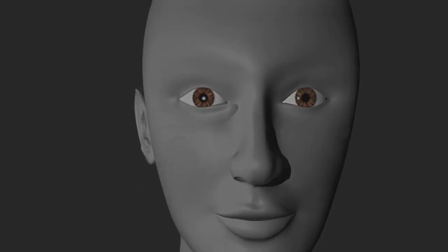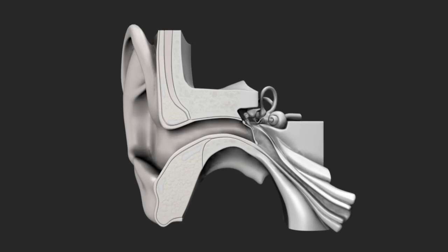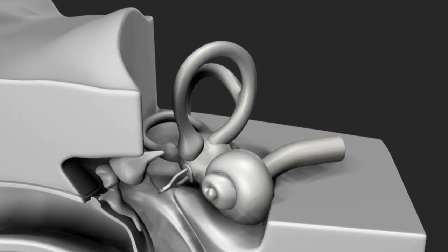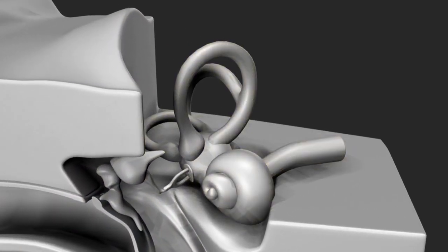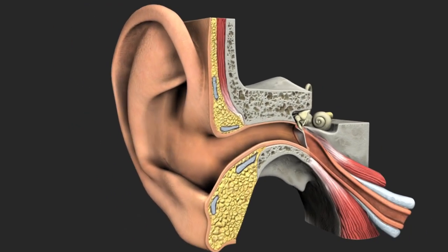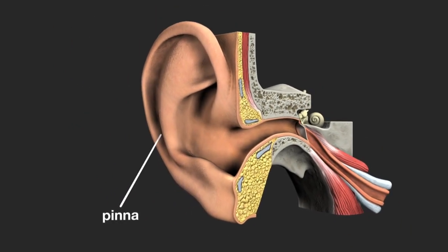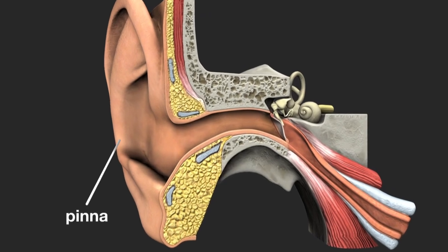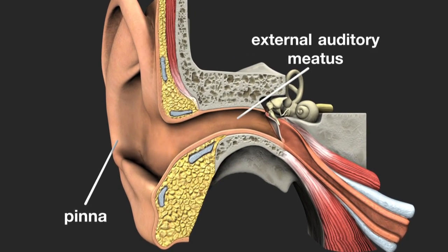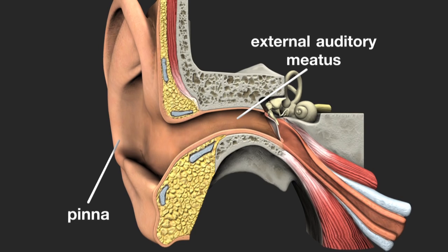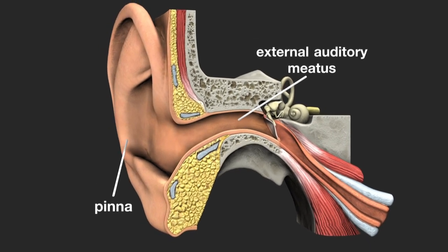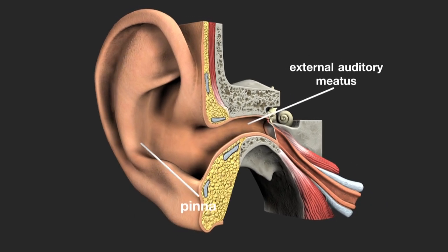The human ear is made up of three parts: the outer, middle, and inner ear. The outer ear consists of the pinna, which serves as protection for the delicate inner parts of the ear, and the external auditory meatus, the ear canal, which collects sound and directs it towards the eardrum. The shape of the pinna also helps to detect where sounds are coming from.